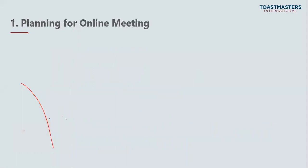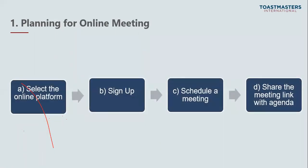When you decide you want to have an online meeting, you need to plan for it. Planning starts from selecting the online platform, signing up into the platform, scheduling a meeting, and sharing the meeting link with the agenda. Let's see each one. What do we mean by selecting the online platform?